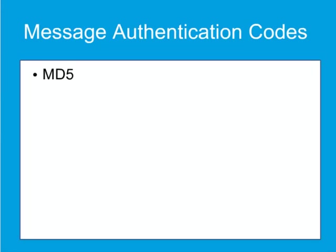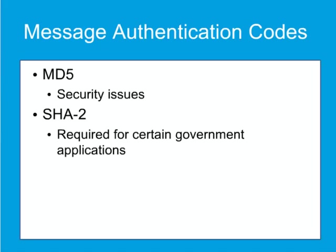The MD5 message digest algorithm is a widely used cryptographic hash function producing a 128-bit hash value, typically expressed in text format as a 32-digit hexadecimal number. One of the issues with MD5 is that it is not collision resistant, and so is not suitable for applications such as SSL certificates or digital signatures that rely on this property for digital security. For this and other reasons, Secure Hash Algorithm 2, or SHA-2, is becoming more widely used. SHA-2 is a set of cryptographic hash functions designed by the NSA, consisting of six hash functions with digests, or hash values, that are 224, 256, 384, or 512 bits. SHA-2 and its predecessor SHA-1 are the secure hash algorithms required by law for use in certain U.S. government applications, including use within other cryptographic algorithms and protocols, for the protection of sensitive unclassified information.